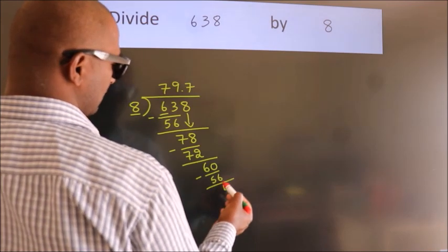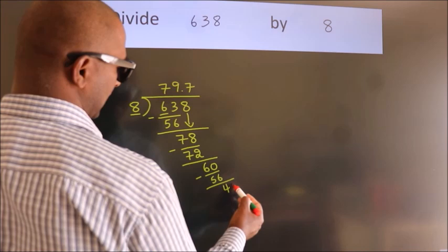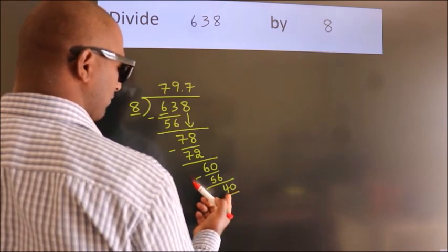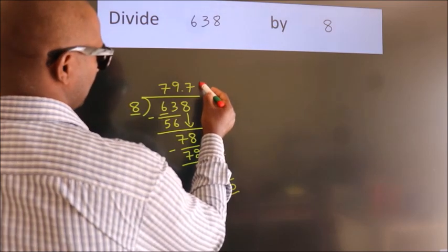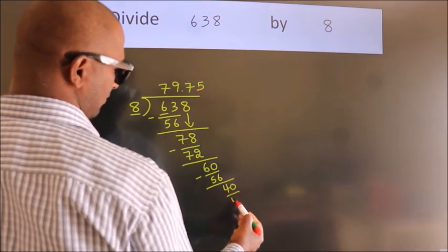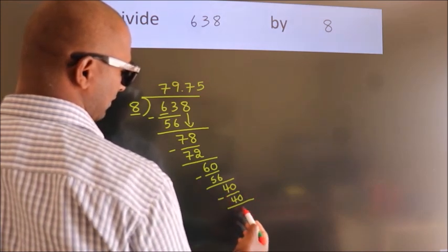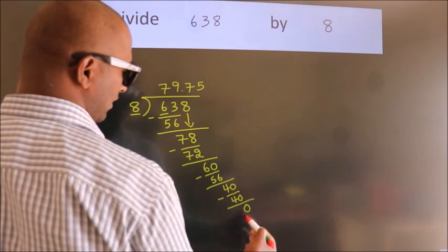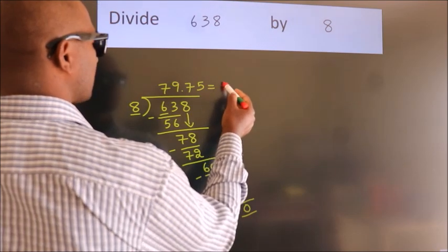After this, we already have the decimal, so directly take 0. So, 40. When do we get 40 in the 8 table? 8 times 5 equals 40. Now we subtract and we get 0. Here, we got remainder 0. So this is our quotient.